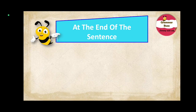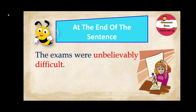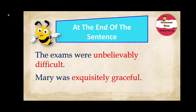Adjective phrases can also appear at the end of the sentence. For example: 'The exams were unbelievably difficult.' Here, 'unbelievably difficult' is an adjective phrase that gives information about the noun 'exams' and appears at the end of the sentence. Another example: 'Mary was exquisitely graceful.' Here, 'exquisitely graceful' is the adjective phrase that modifies the noun 'Mary' and comes at the end of the sentence.